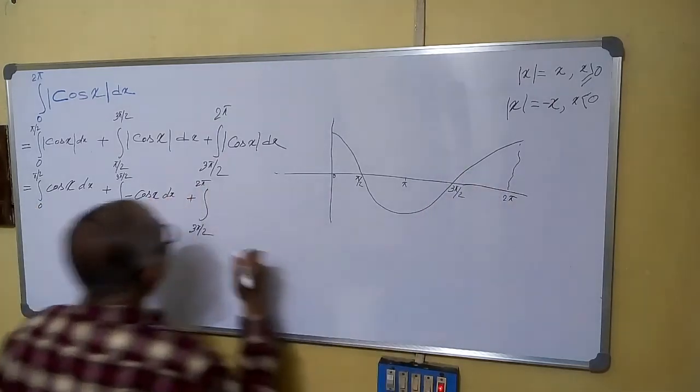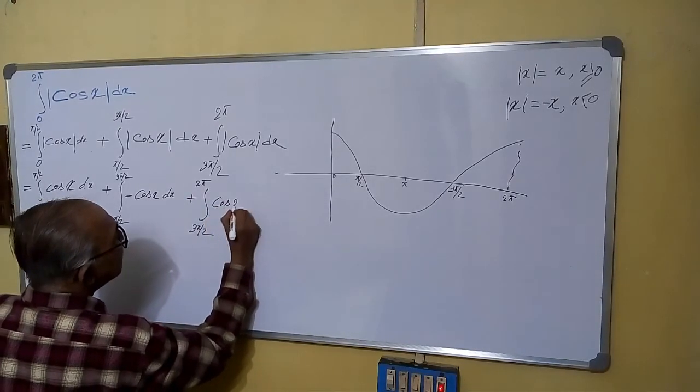Again, this part is positive. So, we will write cos x dx.